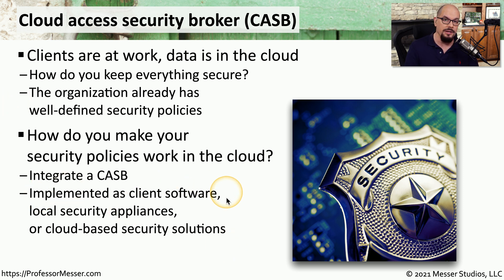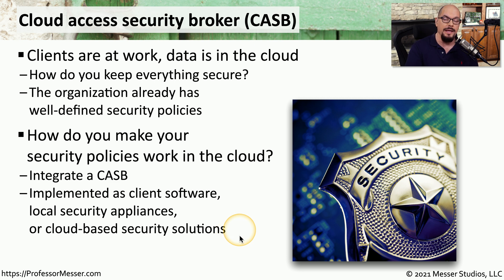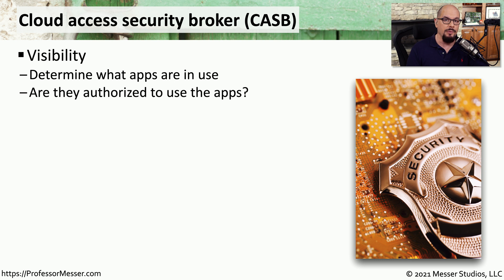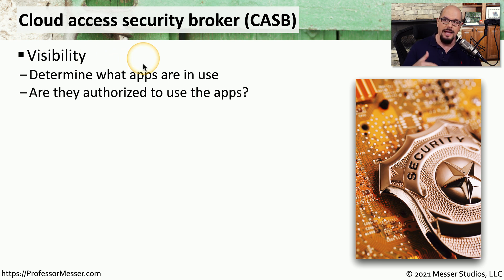A CASB can be implemented as software running on individual devices, as a security appliance local on our corporate network, or the CASB may be located in the cloud where security policy decisions are made. The CASB is able to operate based on four primary characteristics. The first of these is visibility — the CASB needs to understand exactly what applications are in use and what users are authorized to use those applications. Being able to see exactly what data is being transferred is an important part of making this determination.